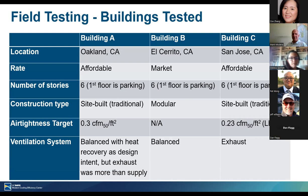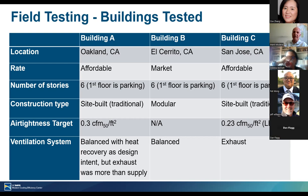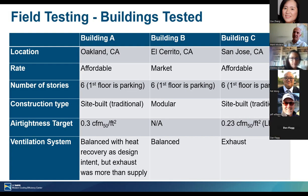Now let's switch over to field testing. We tested three buildings, all in the Bay Area — one in Oakland, one in El Cerrito, and one in San Jose. Two were affordable housing and one was market rate. They were all six-story with the first floor set aside for parking. Two were site-built conventional construction and one was modular. Two were trying to meet air tightness targets — one the California Title 24 value, one the LEED value — and the third had no leakage target as part of its design.